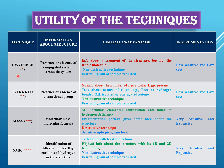UV-visible spectroscopy gives you information about the presence or absence of a conjugated system, including any aromatic system in the molecule. Infrared spectroscopy tells you about the presence or absence of a particular functional group. Mass spectrometry tells you about the molecular mass and the molecular formula of the molecule.